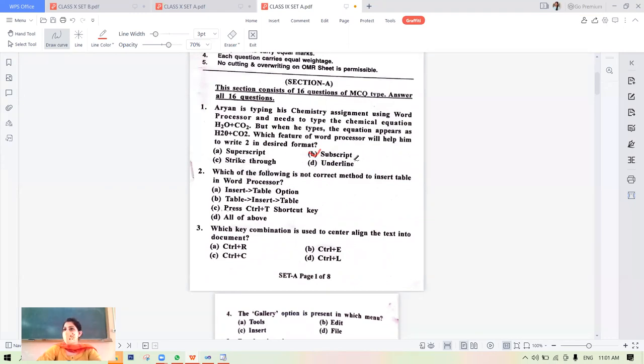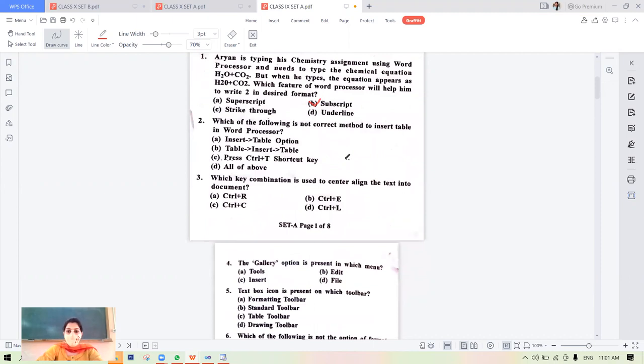Who had Set B? You must look into these questions also. Which of the following is not the correct method to insert a table in word processor? Insert table, table menu insert, Control plus T. The shortcut key is Control plus F12, so Control plus T is the incorrect method. Your answer will be C part.